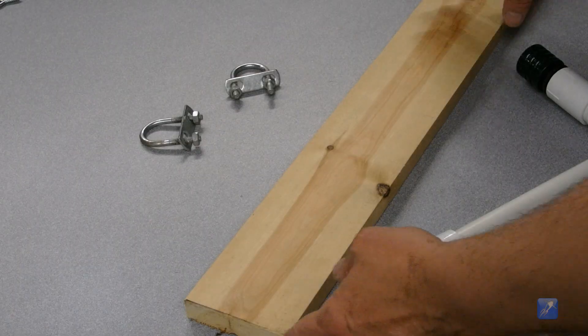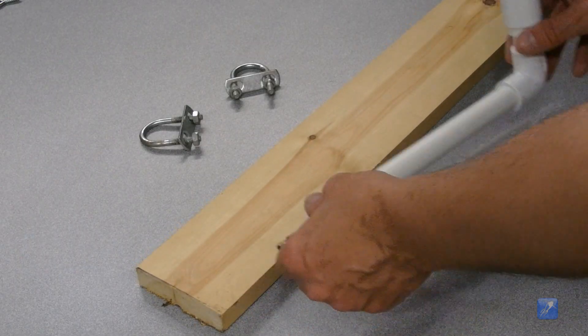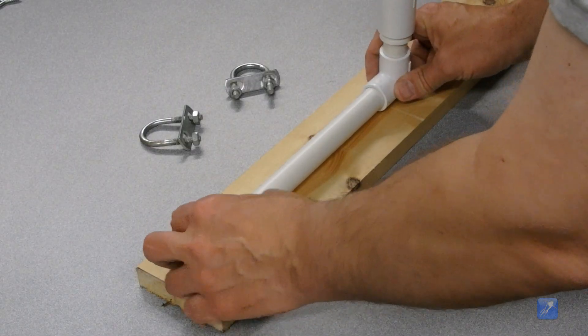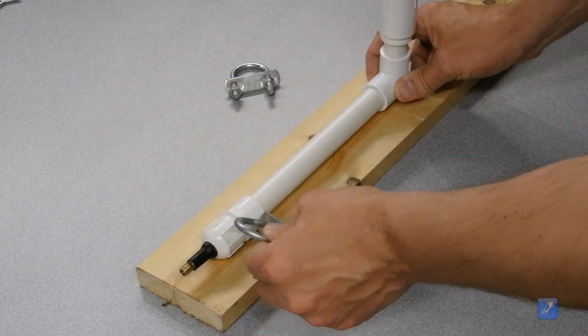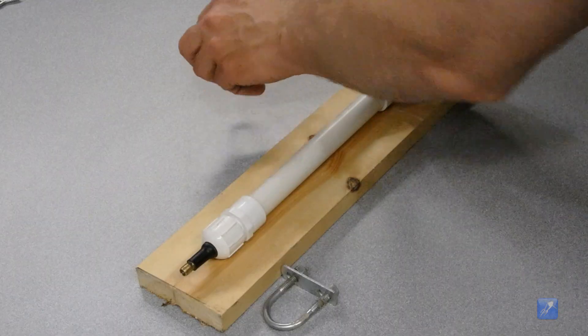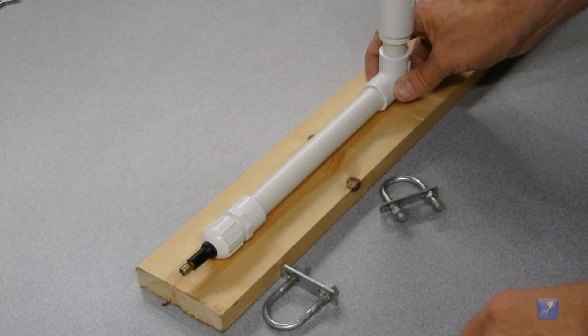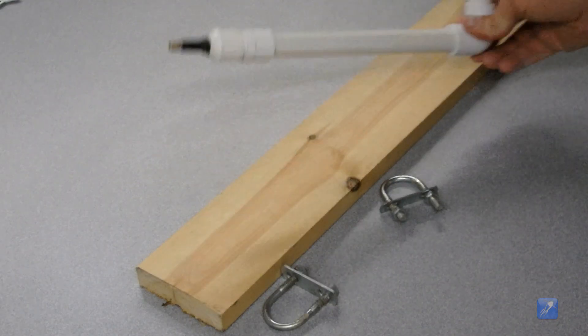The last step is to make a base to hold the launcher in the upright position. You can use the two U-bolts to secure the launcher to a piece of scrap lumber, or you can build a more elaborate launcher base from wood or other material. That part we'll leave to your imagination and creativity.